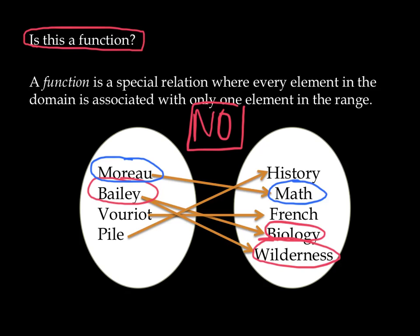So, the reason this fails to be a function is that Mr. Bailey's classes are unclear. Mr. Bailey is an element in the domain, and he is associated with two elements in the range.